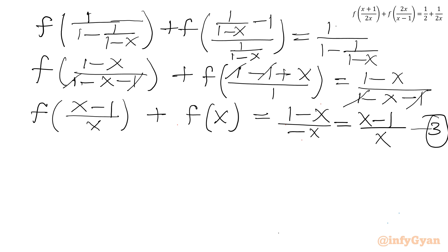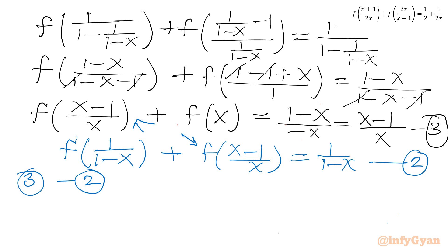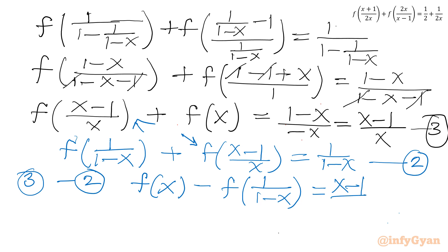Now I will subtract equation 2 from equation 3. Equation 2 was f(1/(1-x)) + f((x-1)/x) = 1/(1-x). Performing 3 minus 2, the f((x-1)/x) terms cancel, and we get f(x) - f(1/(1-x)) = (x-1)/x - 1/(1-x). Let us call this equation number 4.